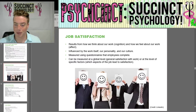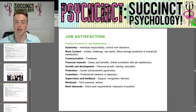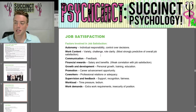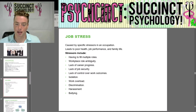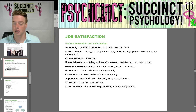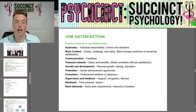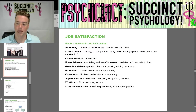Factors involved in job satisfaction include: autonomy — individual responsibility and control over decisions — variety, challenge, and role clarity, which is most strongly predictive of overall job satisfaction. There's also communication or feedback, financial rewards such as salary and benefits (though there's only a weak correlation with job satisfaction), growth and development including personal growth, training, education, and promotion opportunities, co-worker relations, adequacy of supervision, recognition and fairness, workload, time pressure, tedium, and work demands and security.